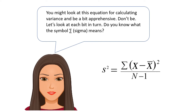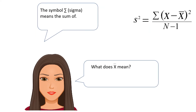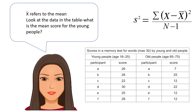Do you know what the symbol sigma means? The symbol sigma means the sum of. So let's look at the equation again. What does X with a bar on top mean? X with a bar on top refers to the mean.